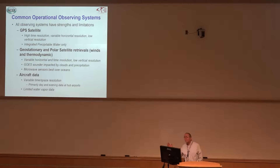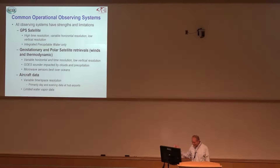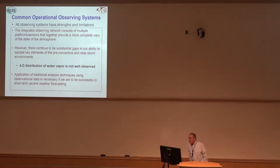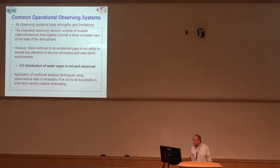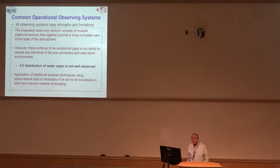And if you have bad weather — thunderstorms affecting airports — the planes aren't going up and coming down where you want them. So when you have interesting weather, you might not have the data. We have a lot of different platforms and sensors that, if combined intelligently, can give a more complete view of the atmosphere, but there are still gaps in our ability to sample the pre-convective environment before storms develop and the near-storm environment.